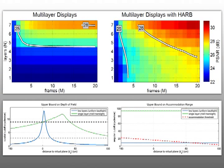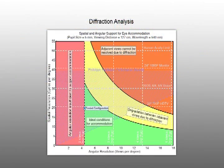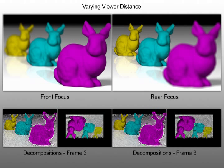In our paper, we derive upper performance bounds and provide performance simulations for Focus 3D, and show that the architecture supports moving observers over a wide viewing zone, even away from the conjugate plane of the HAR backlight.